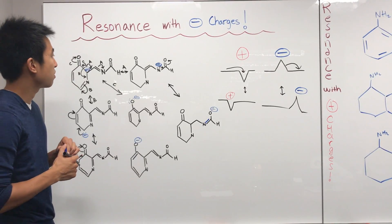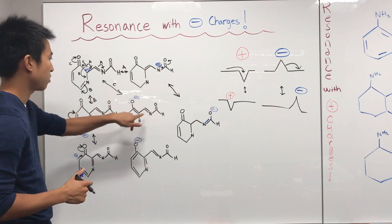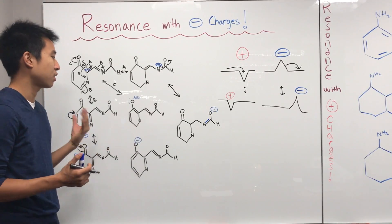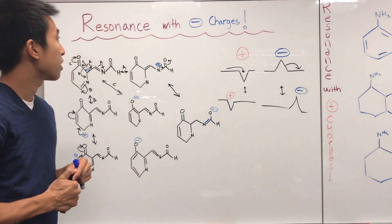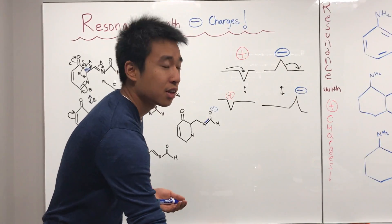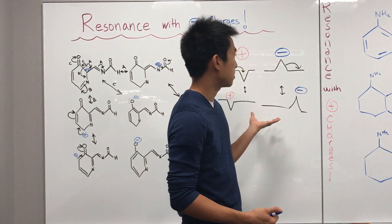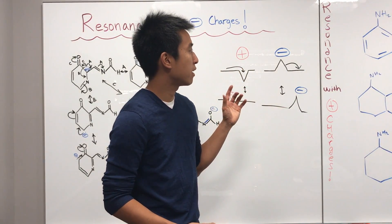So altogether, this molecule has one, two, three, four, five, six resonance structures. And those are the resonance structures. Okay. So there you go. That's how I think about negative charges. Hopefully that helps you out. And hopefully that analogy helps you out.